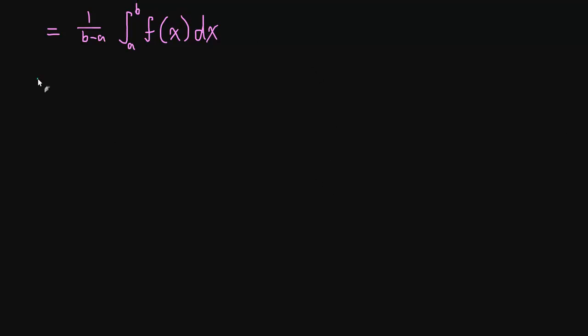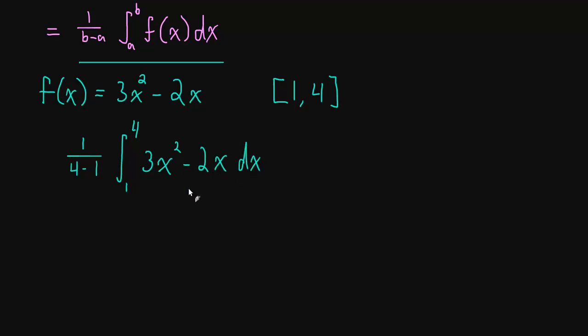So let's find the average value of the function f(x) equals 3x squared minus 2x. Keep it kind of easy. Find the average value over the interval from 1 to 4. Well, this tells us the average value. The interval is just what a and b are. So we have 1 over (4 - 1) times the integral as x goes from 1 to 4 of 3x² - 2x.